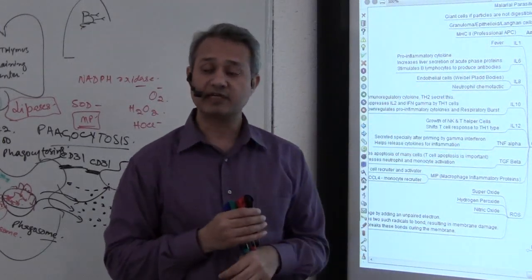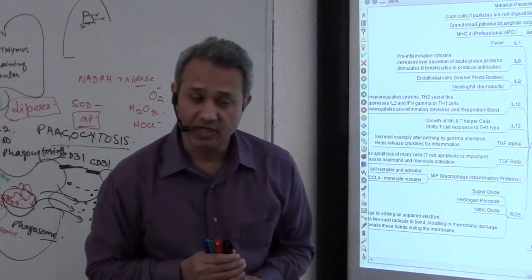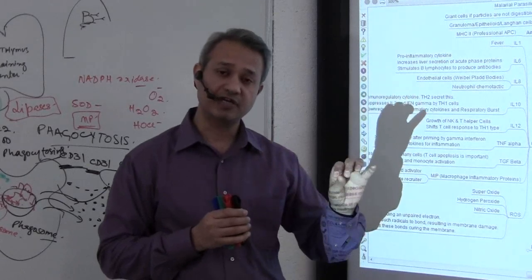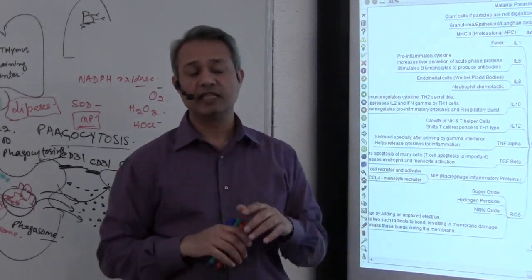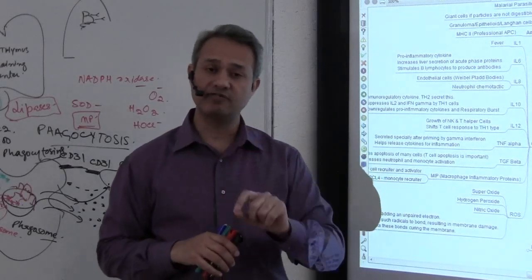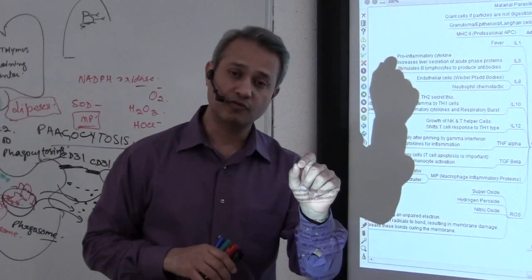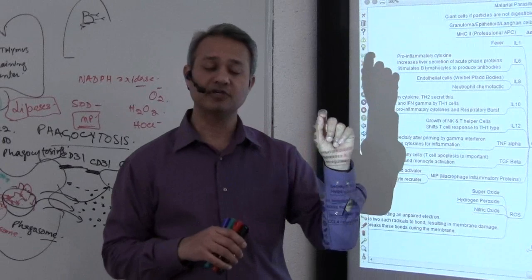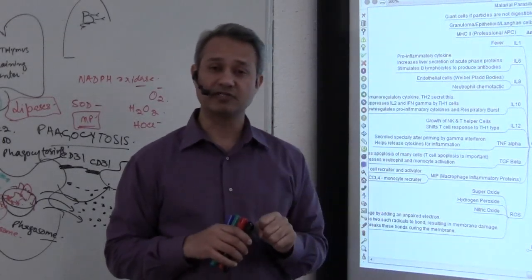That chemotactic factor, what is it going to do? It is going to call the neutrophils. So what would happen is that soon after the infection, neutrophils will be brought into the tissue. That is why acute inflammation is neutrophil filled. It is filled with the neutrophils. Now, why not more macrophages?